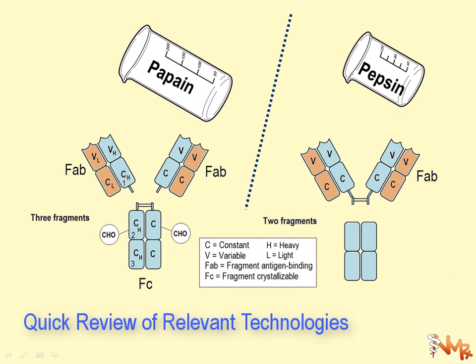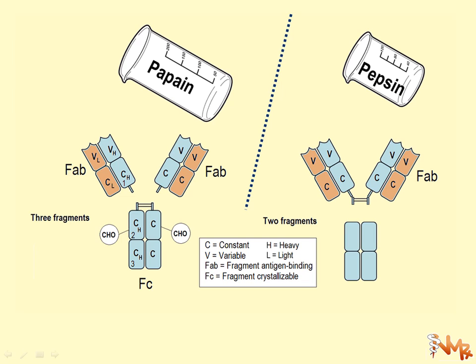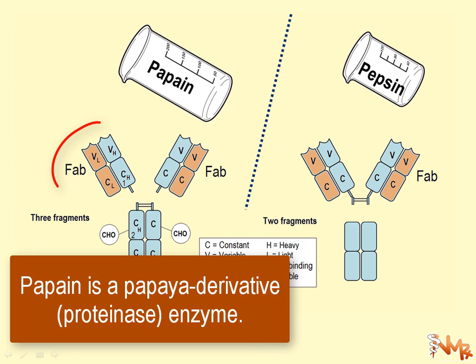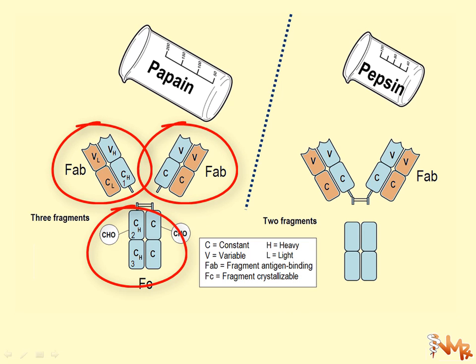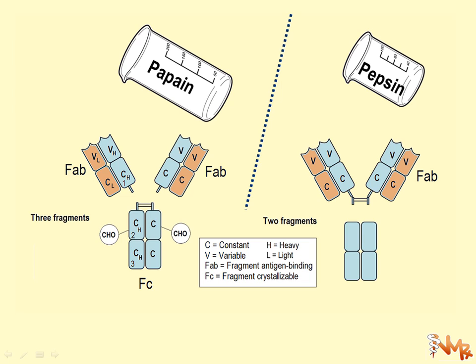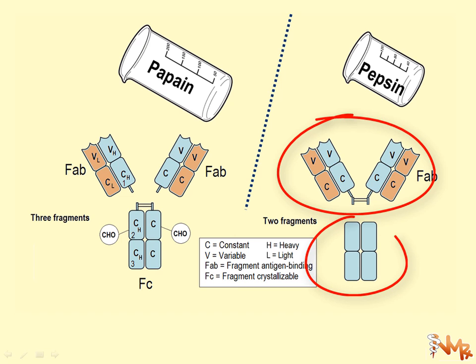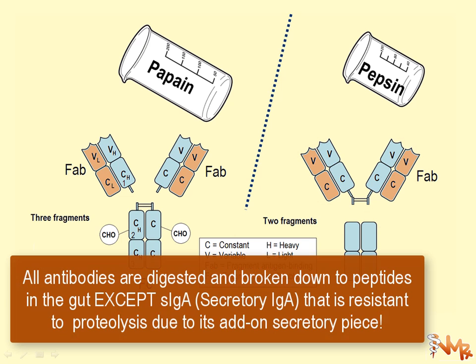In research and pharmaceutical production of monoclonal antibodies, it is important to be able to degrade antibodies into their components. When the enzyme papain is added to an antibody, it breaks it into three fragments: two Fab fragments and one Fc fragment. However, when pepsin is added, it breaks the antibody into two components: a conjoined F(ab')2 fragment and a single Fc component.